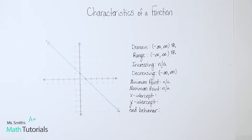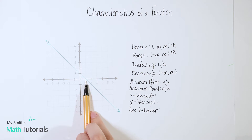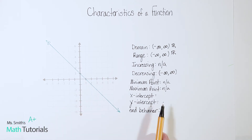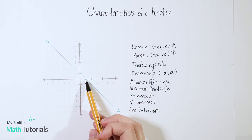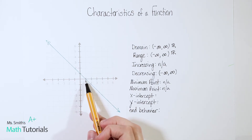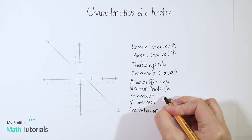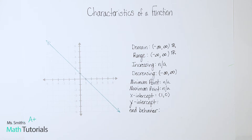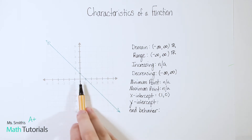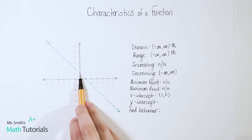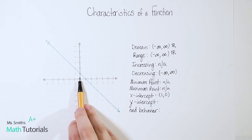X-intercept — finally something we can answer. We want to know where does this graph cross the x-axis. In this case it only happens once, right there. Different teachers have different preferences for how they want you to write the x-intercept; I prefer you write the actual point. That point falls at (1, 0), so I write that as (1, 0). For our y-intercept, we're looking at where does this line cross the y-axis — I see it happens right there, and that point is (0, 1).